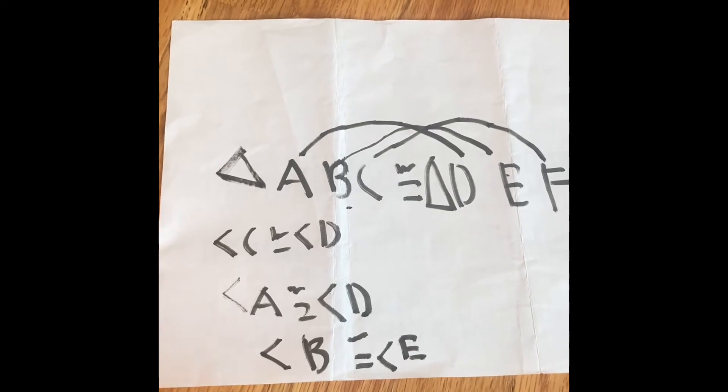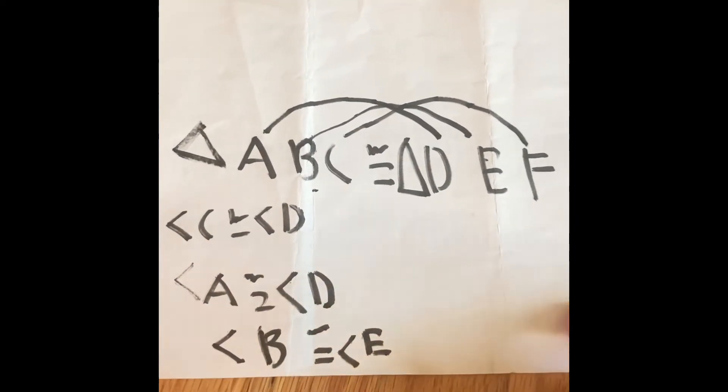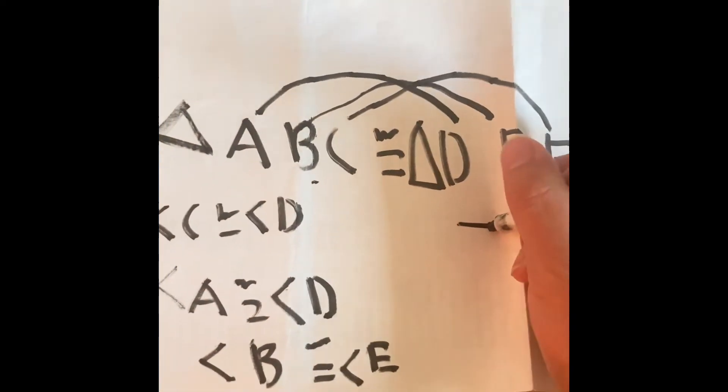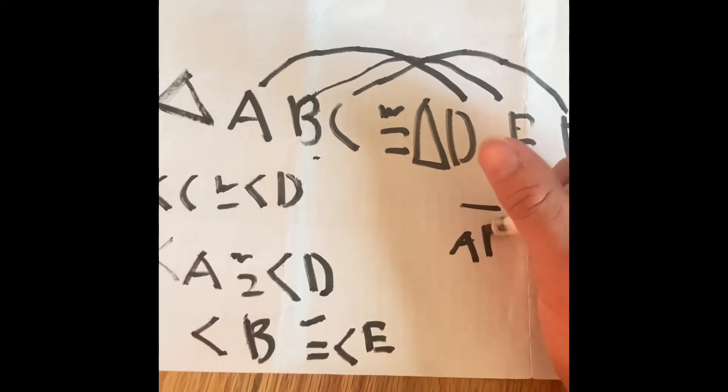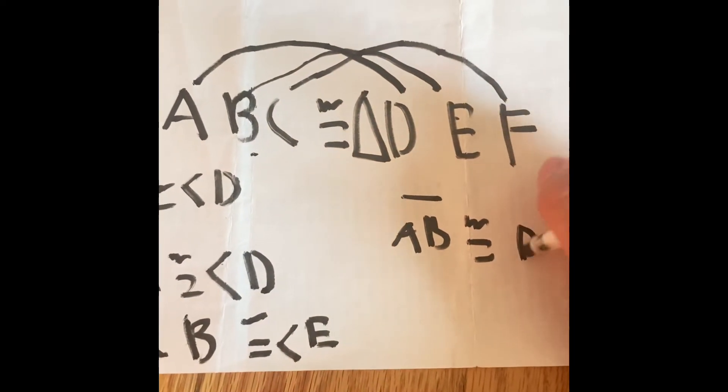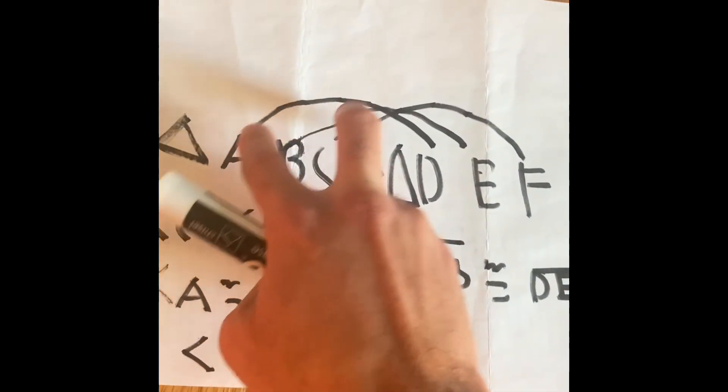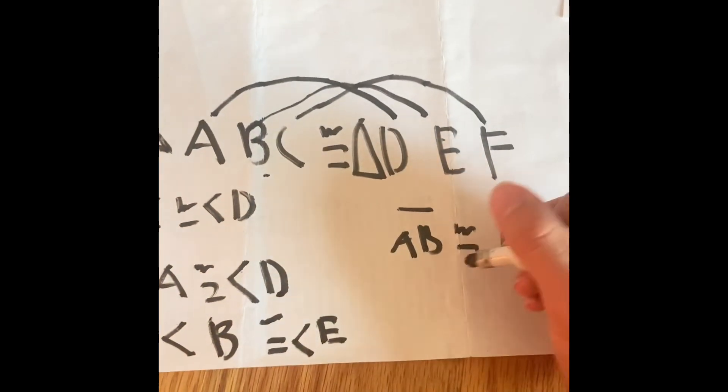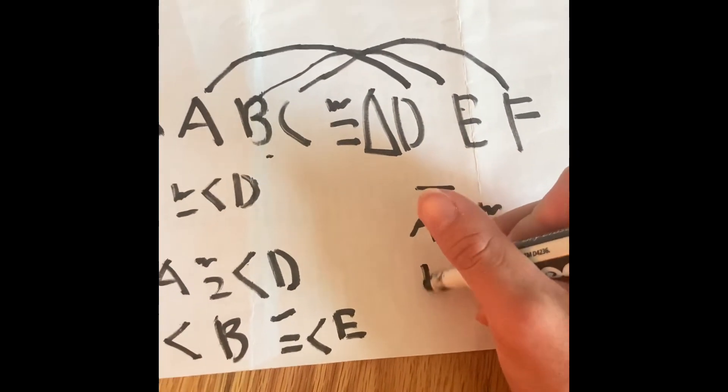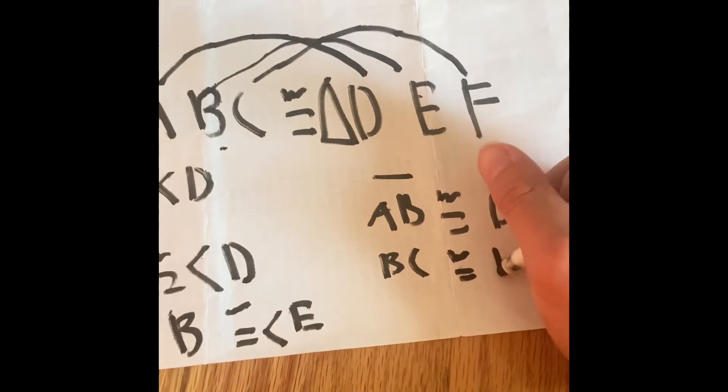We can also make it into doubles and turn them into segments. We can say segment AB is congruent to segment DE. Segment BC is going to be congruent to EF.